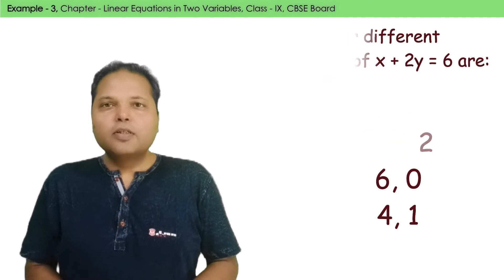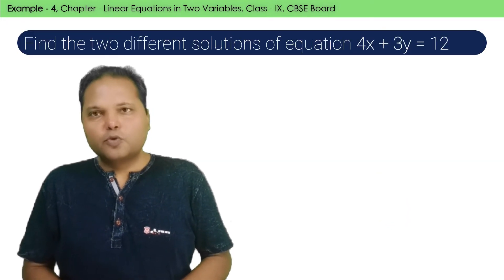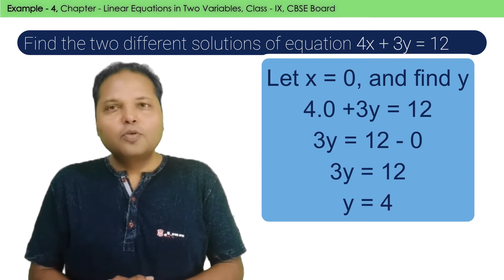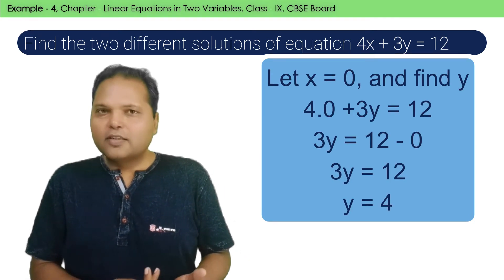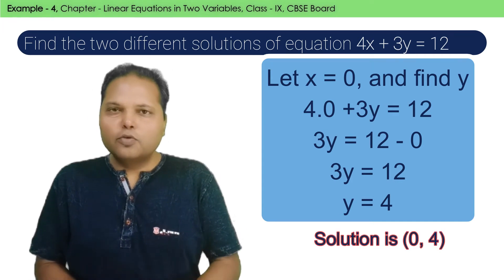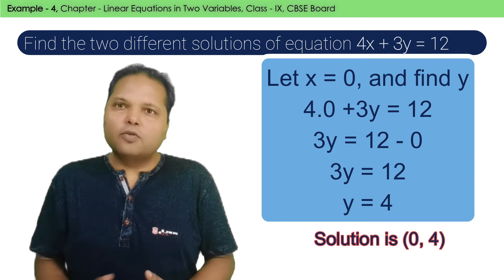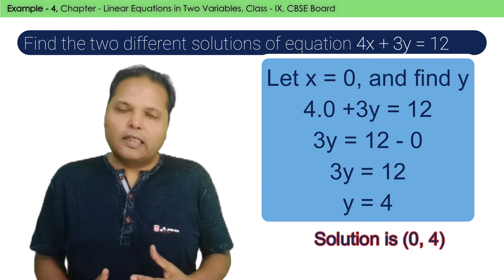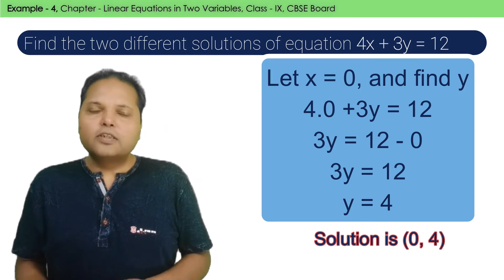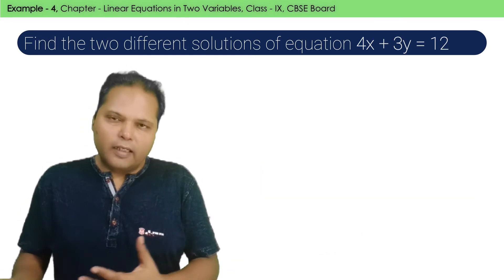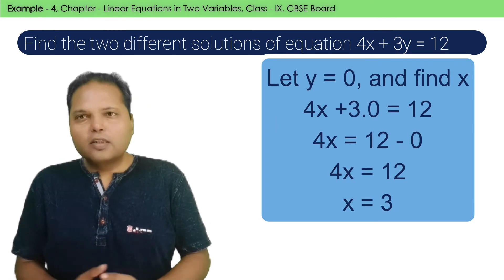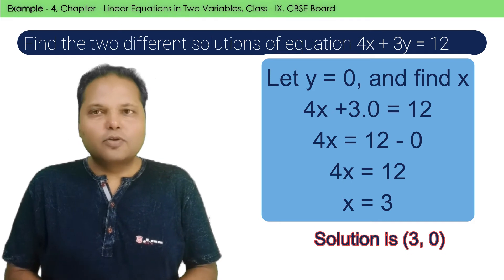The next question is 4x plus 3y is equal to 12. We need to identify two solutions. As we know, we have two variables here, and we have to assume one variable's value. Let's assume x's value is 0 and find out the corresponding value of y. When we calculate it, we get our first solution. Now to find out the second solution, we follow the same process and get our second solution.